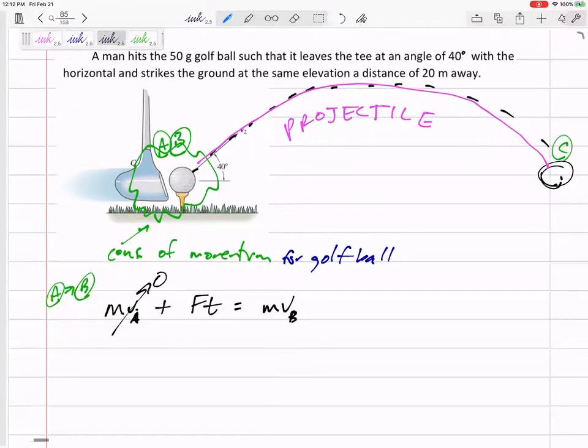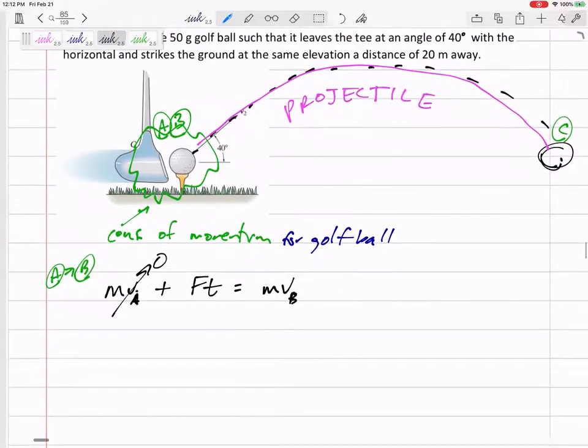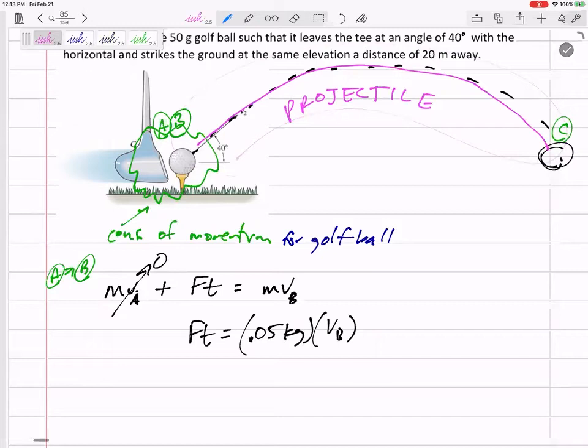Before the collision there was no velocity, so to get the impulse, which I'm going to label as F·t, I just need to take the mass 0.05 kilograms times velocity at B. What is the velocity right after the collision? They didn't tell me, I don't have that information yet. But do you think we could find it by looking at the projectile half of the problem? Let me pause and jump to the projectile part. You see, this is the roadmap we're going to take: from the projectile part I can get the initial velocity, then bring that back here.